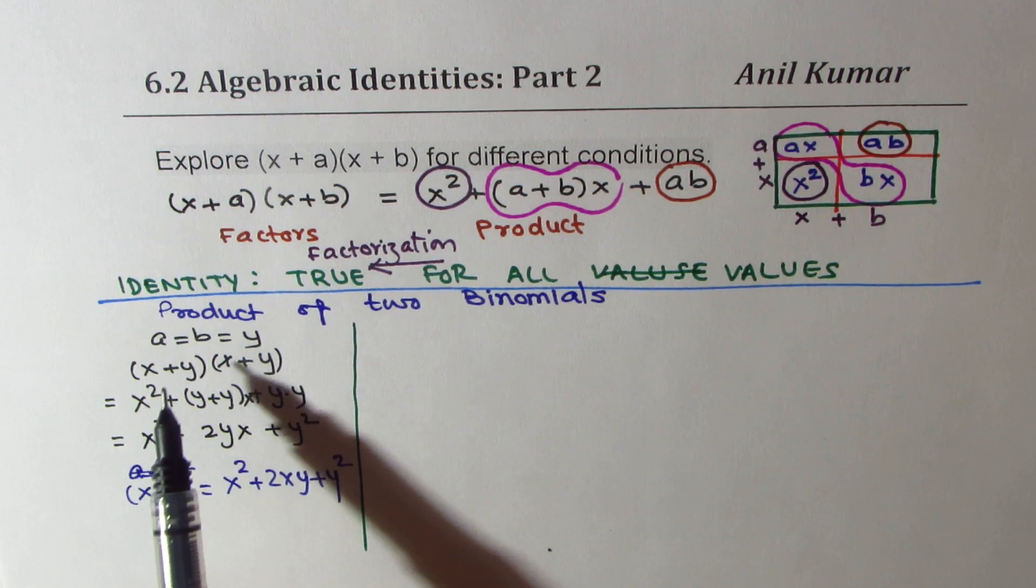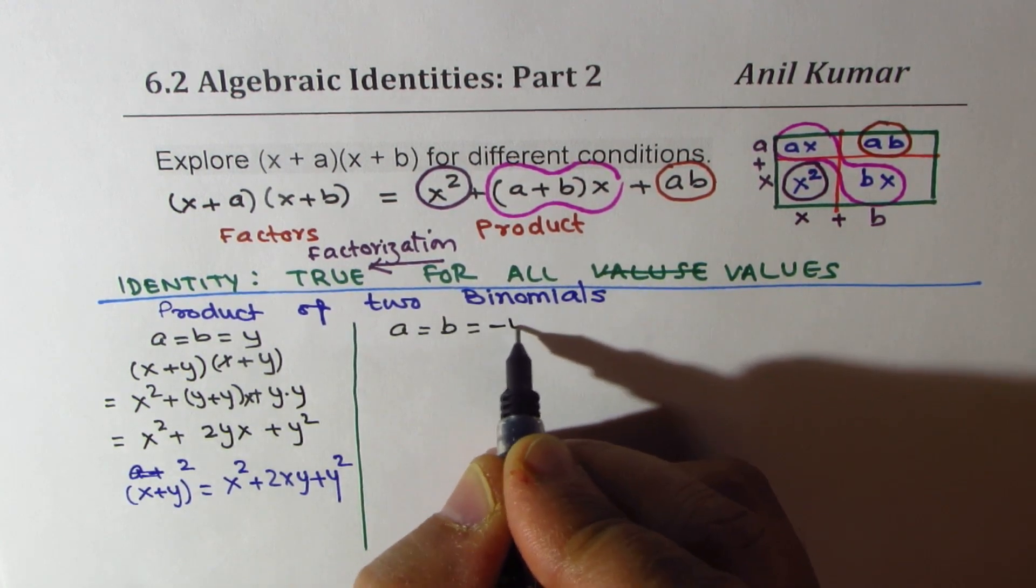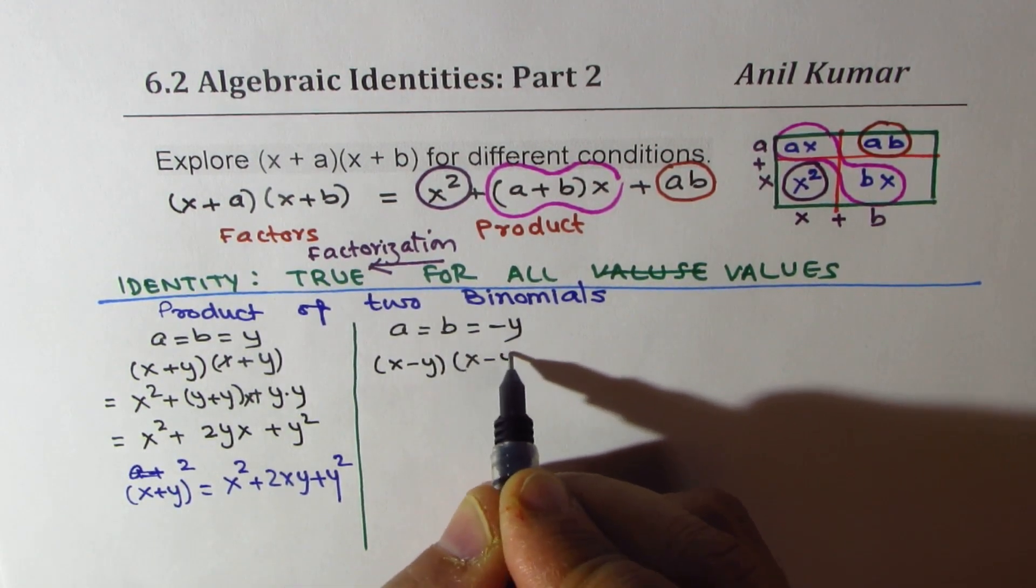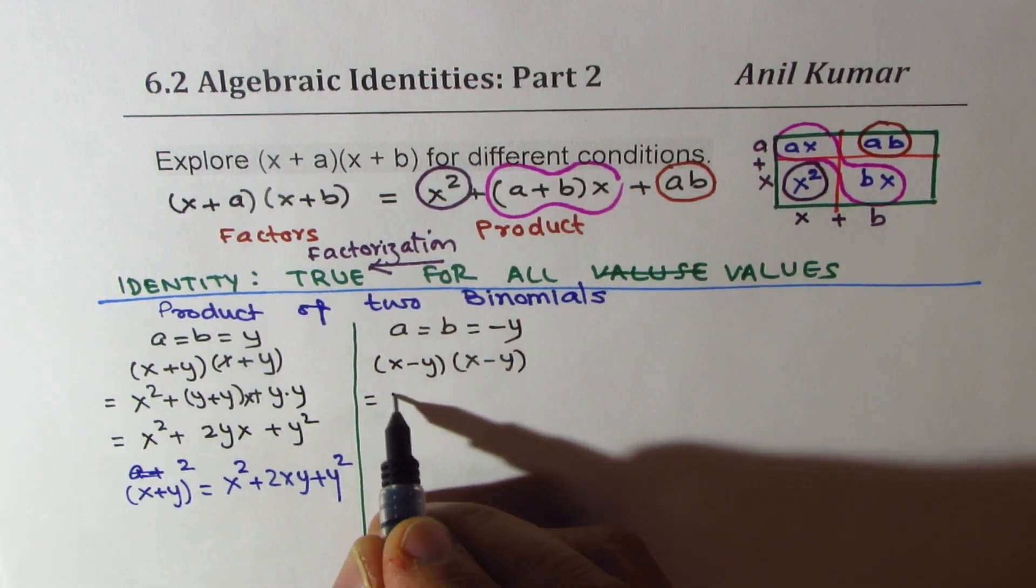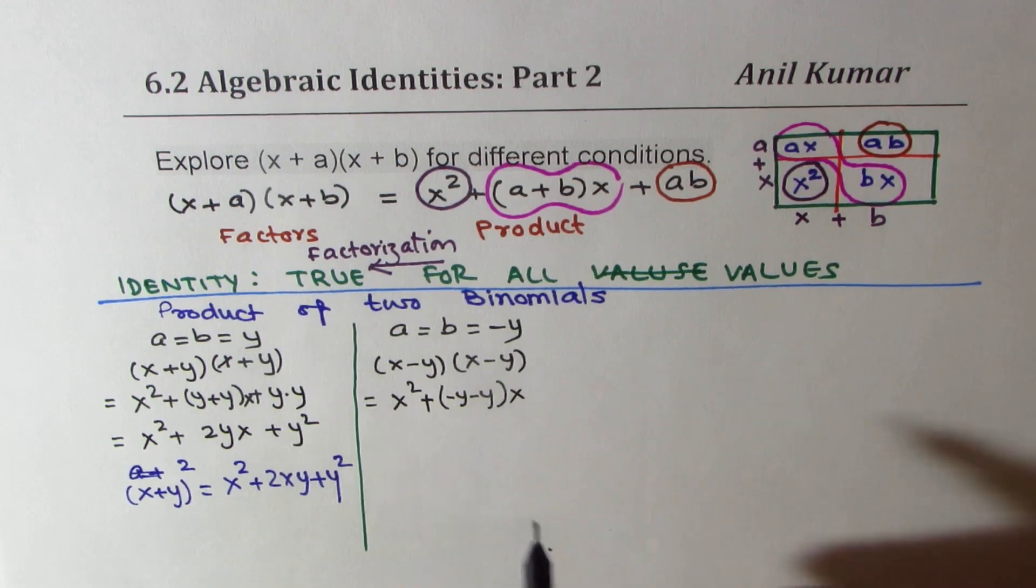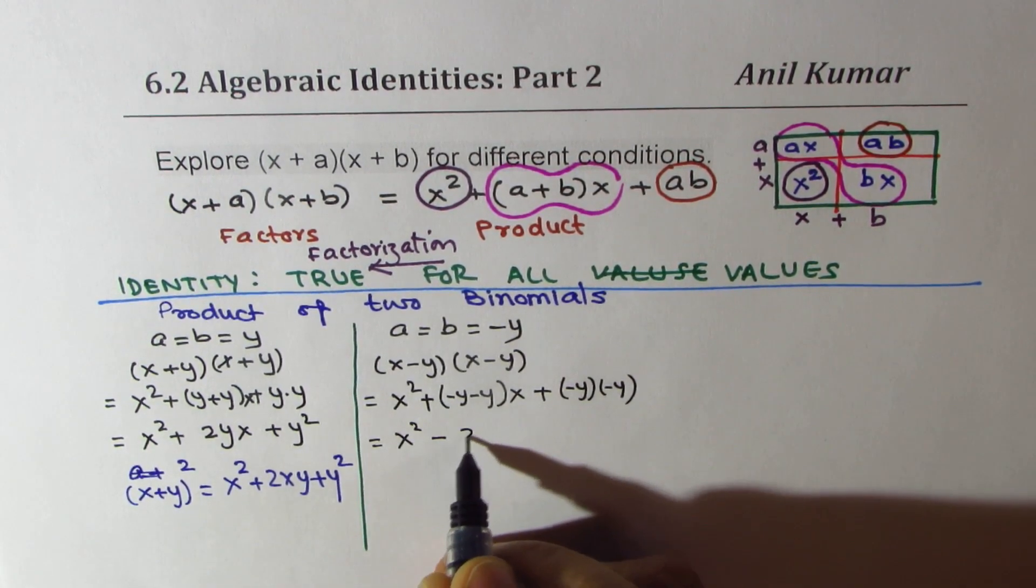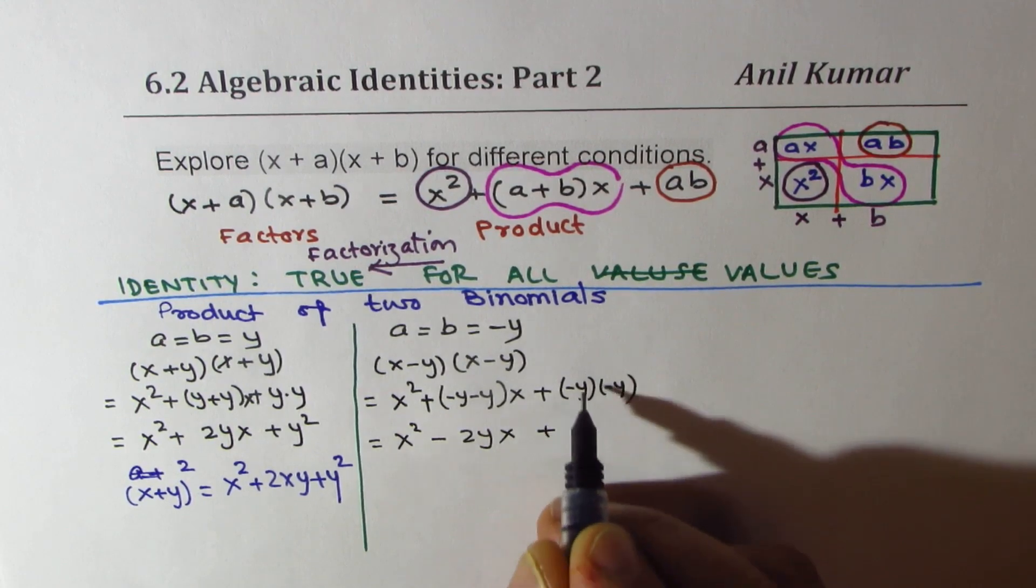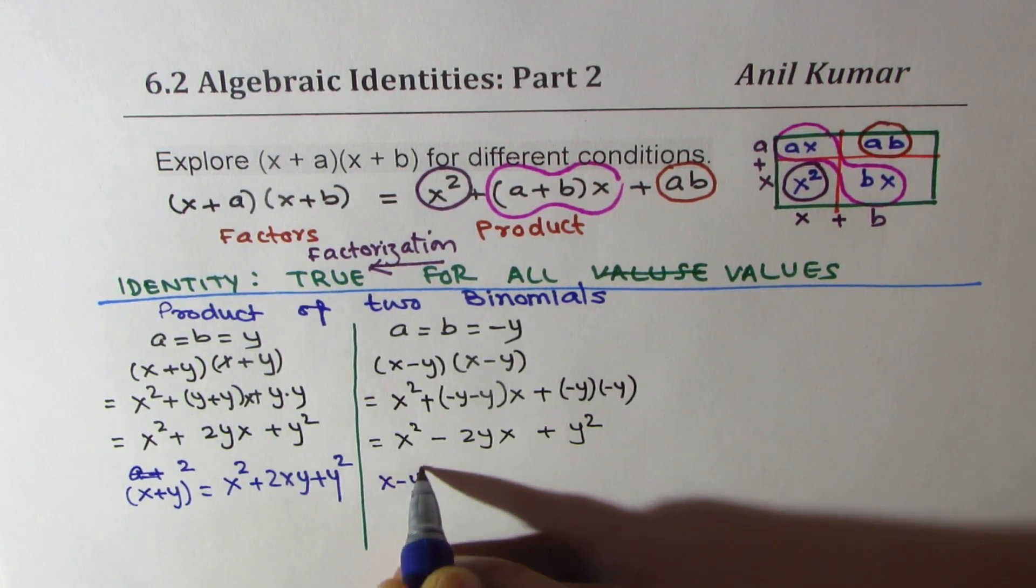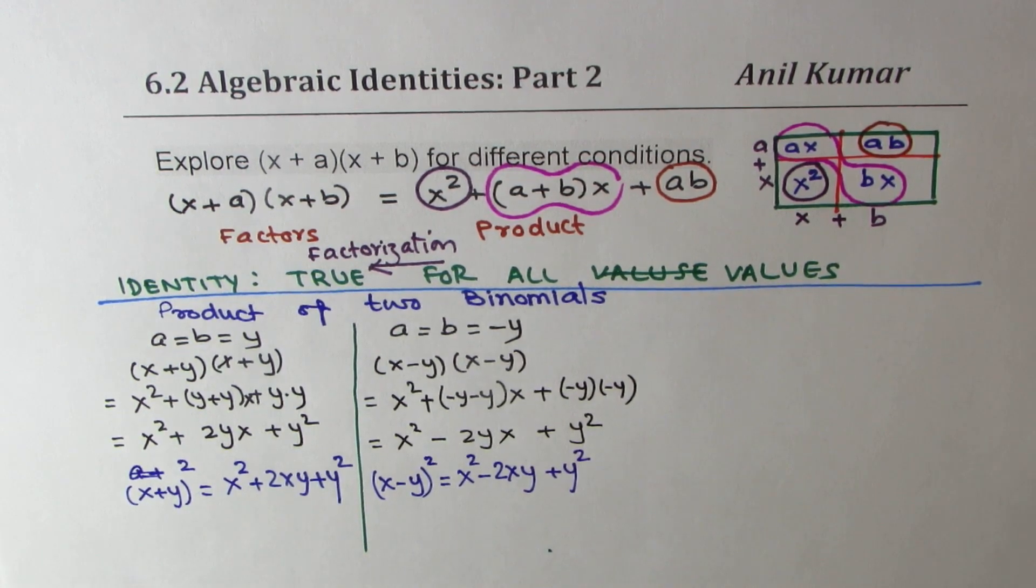Now, we had one condition when both a and b were equal to y. Now, what happens if a equals to b, but both are equal to minus of y? In that case, I will get here x minus y times x minus y. And when I expand it in this form, I get x squared plus minus y minus y. Add these two. Plus product of minus y and minus y. Well, that gives me x squared minus 2yx. And here, minus minus is plus y squared. So that gives me another very important identity, which is x minus y whole square equals to x squared minus 2xy plus y squared.